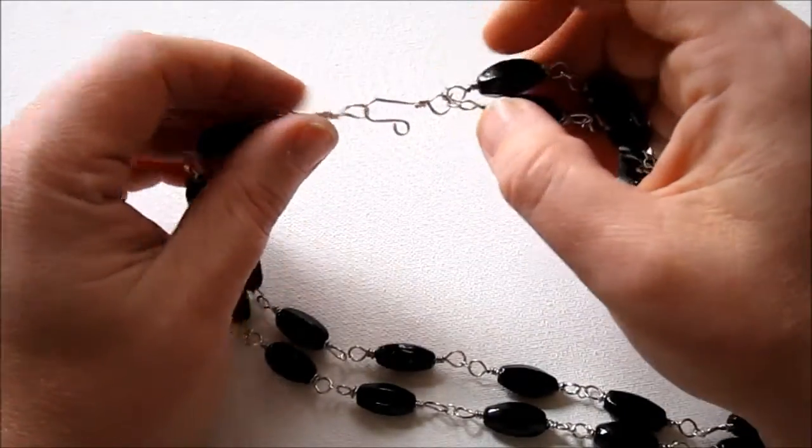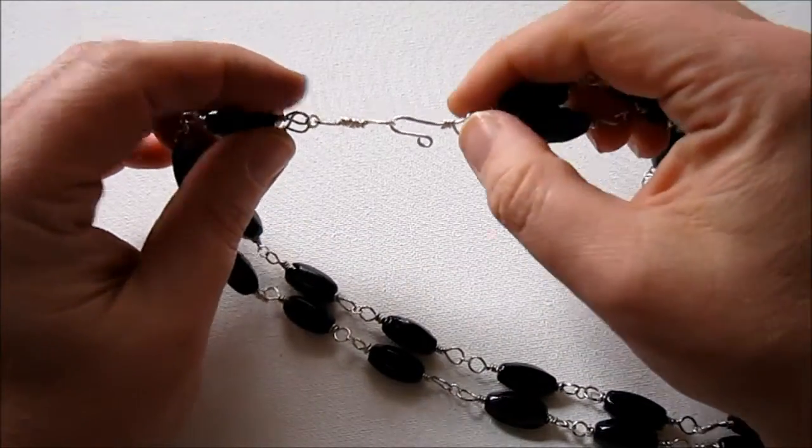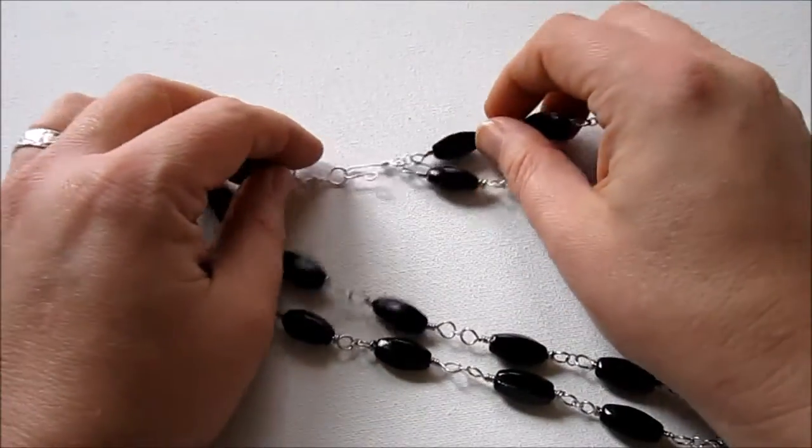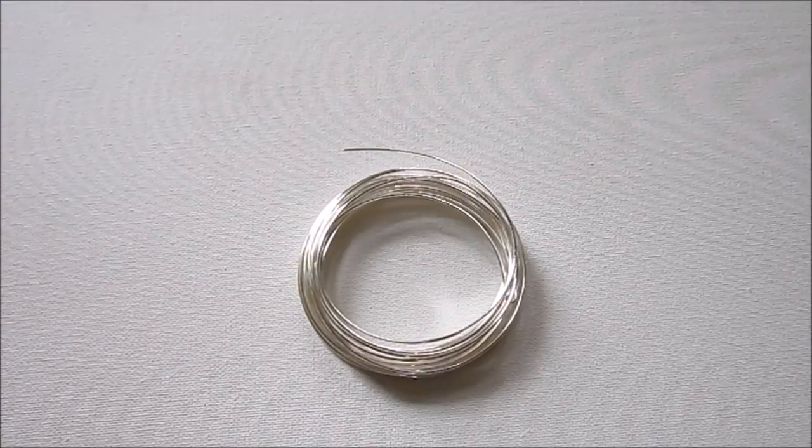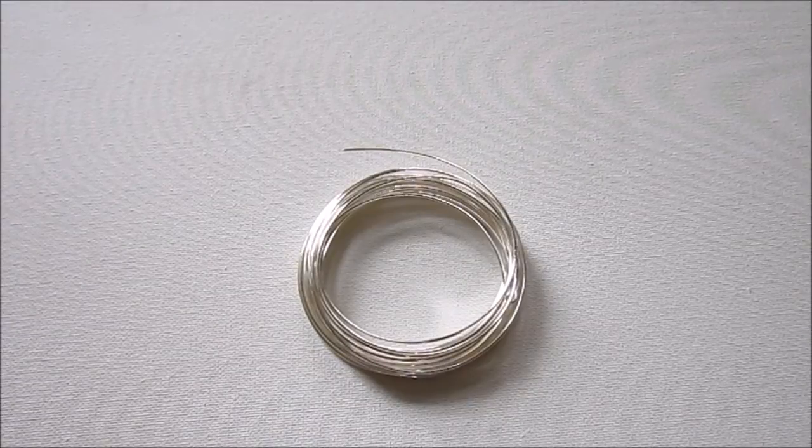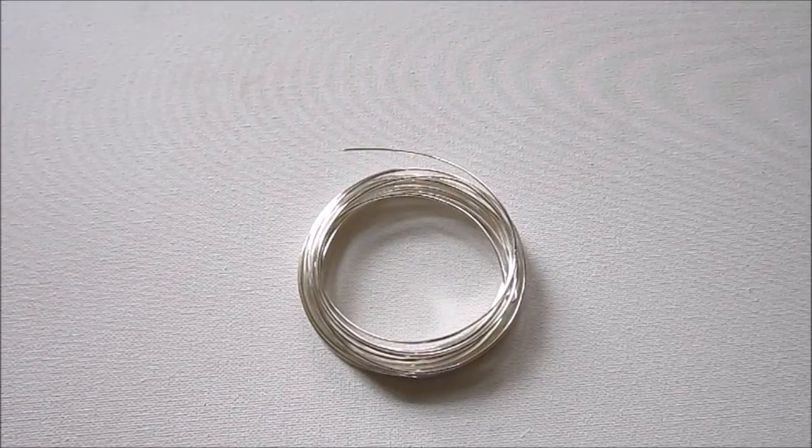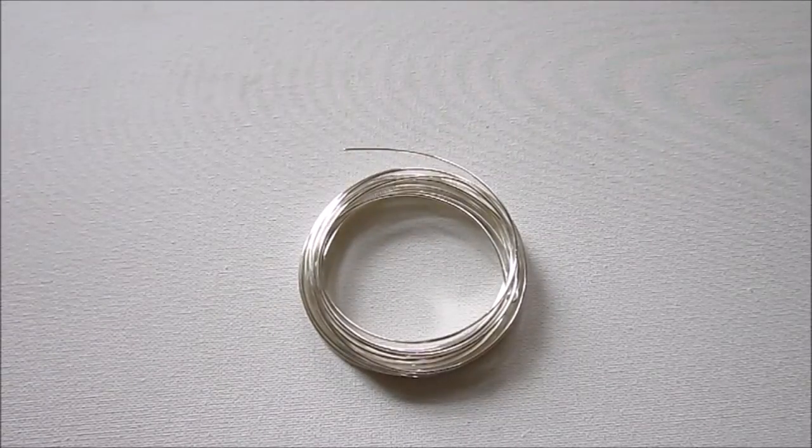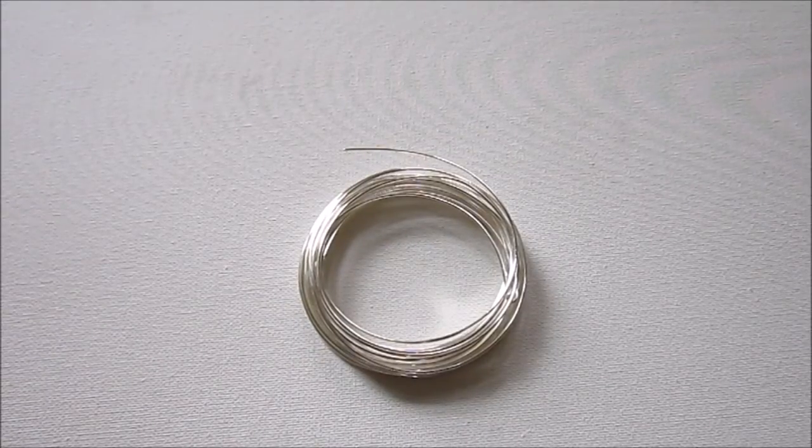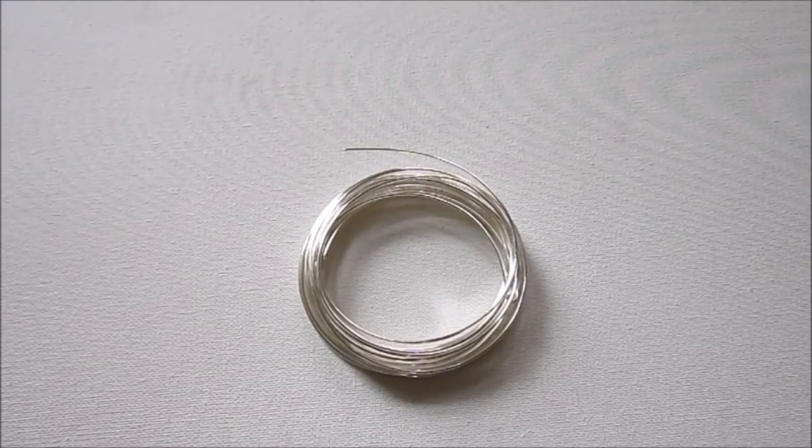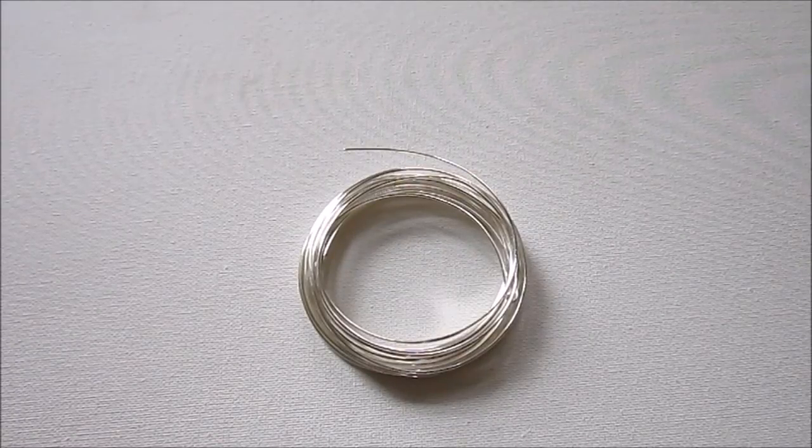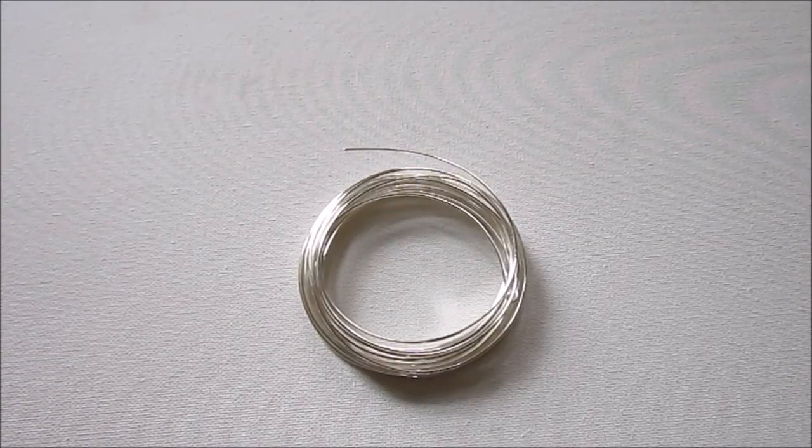It's just a simple S-clasp, but it was perfect for this necklace. So, for this clasp, we're going to be using 18-gauge, half-hard, round wire. Now, the specific wire that I'm using is actually silver-plated copper wire that I just got at Michaels. You can find it readily available.